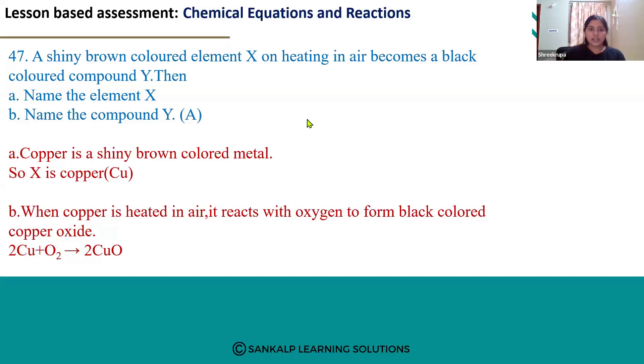So here, shiny brown colored element X upon heating, when it is subjected to heat, it will form black colored compound Y.